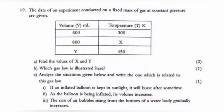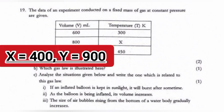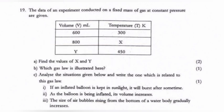Question 19: The data of an experiment conducted on a fixed mass of gas at constant pressure are given. 19a: Find the values of X and Y. Answer: X is equal to 400, Y is equal to 900. 19b: Which gas law is illustrated here? Answer: Charles law. 19c: Analyze the situation given below and write the one which is related to this gas law. Answer: If an inflated balloon is kept in sunlight, it will burst after some time.